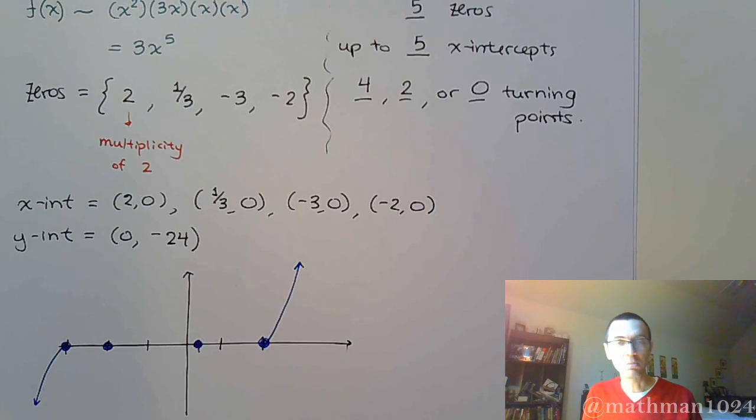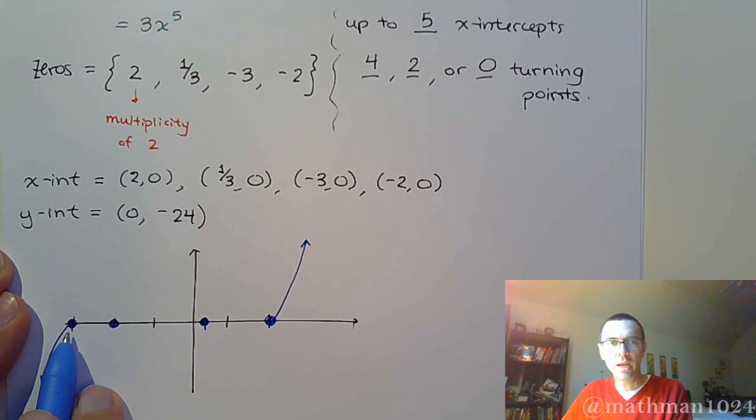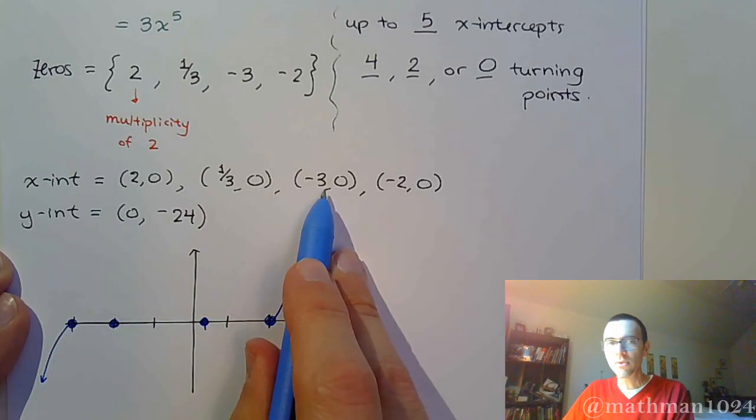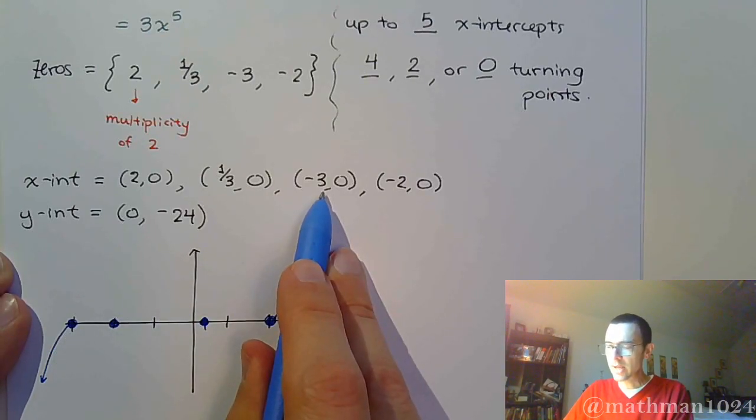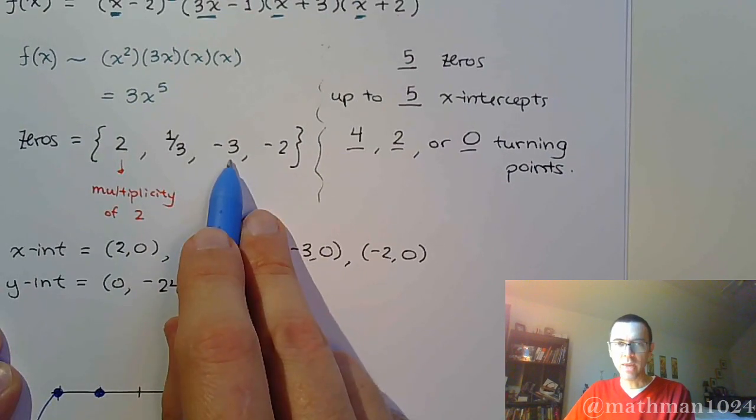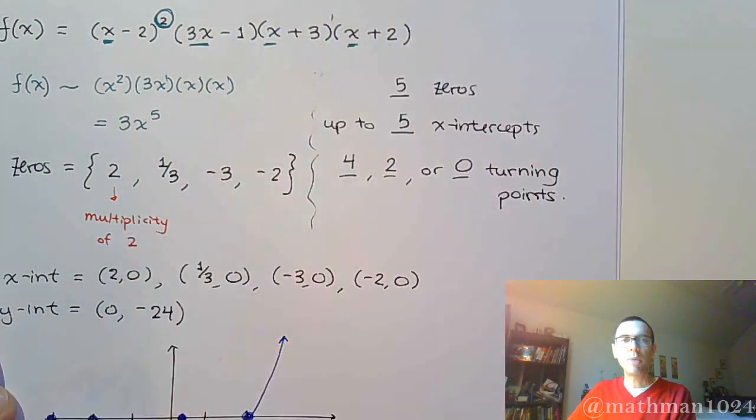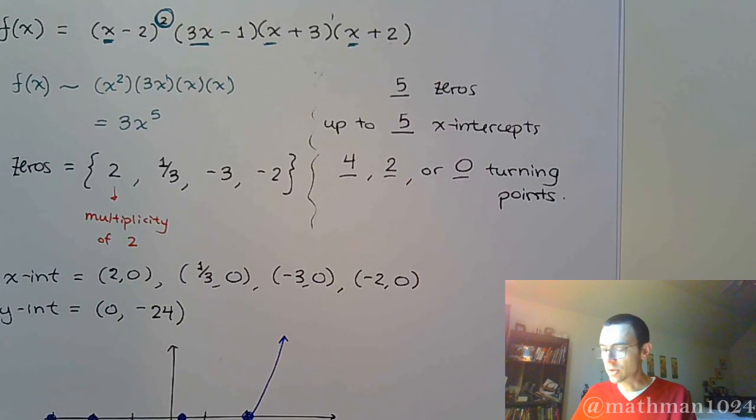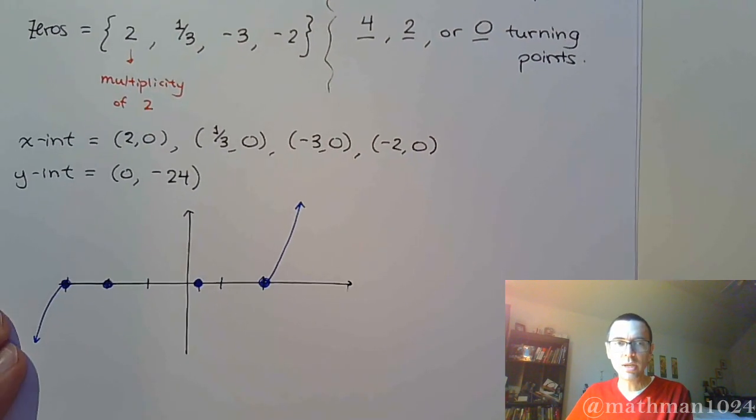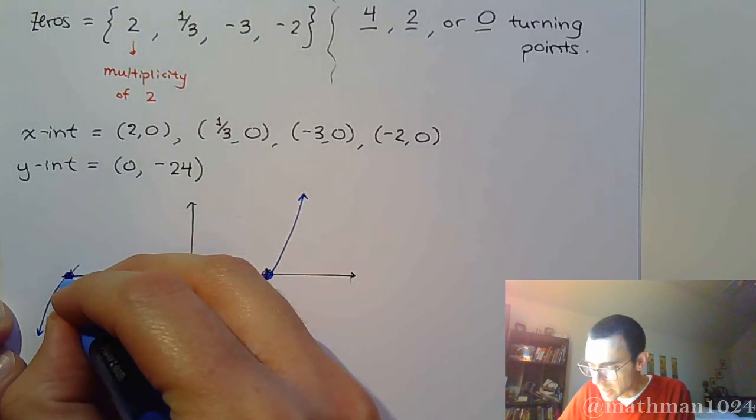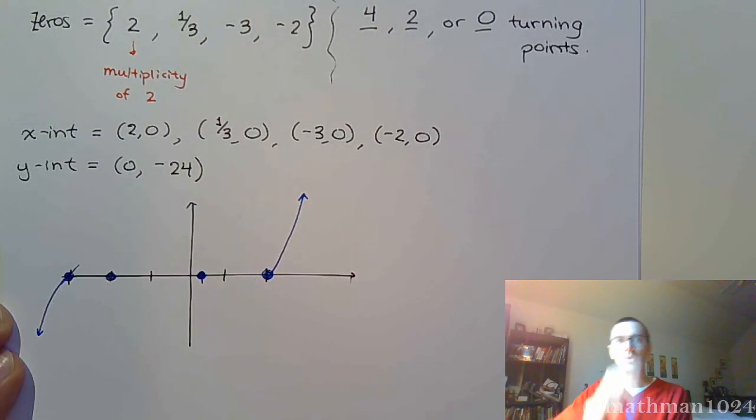Now, this is where you have to pay attention to multiplicities. So when you cross, or when you hit right here, when you have negative 3, negative 3 for that x-intercept is right there. It came from that 0, which came from this factor. Now, this was a factor to a power of 1, which means it's a linear factor, which means if you were to zoom in on this, it's going to look like a line as you go through it. So it's going to go like that.